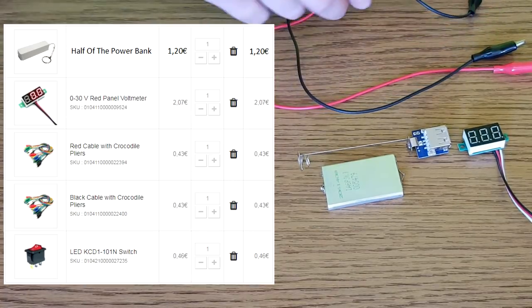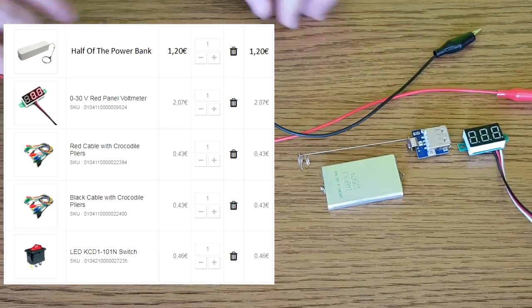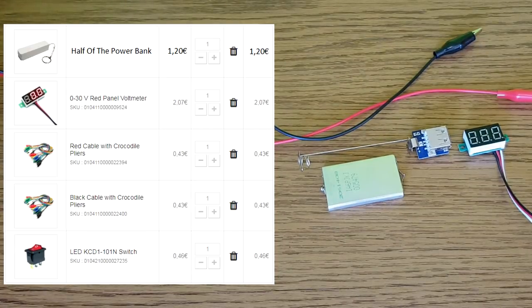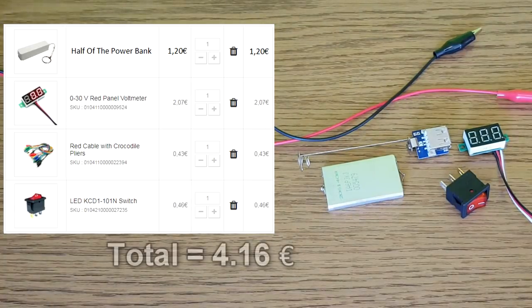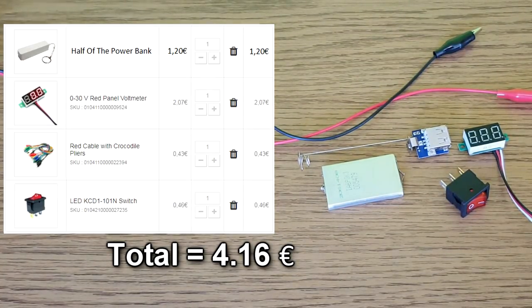Red and black cables with crocodile pliers. And a switch. I'm using half of the crocodile pliers, so they cost me only half the price for this project. The total price is less than five euros.